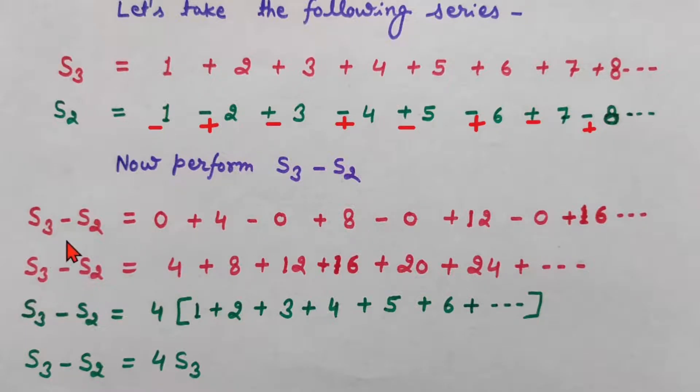So I can write this S3 minus S2 as 4, 8, 12, 16, 20, 24. Simply multiples of 4 here up to infinity. So S3 minus S2 is actually we can take out 4. We can take 4 common. So it will be 1 plus 2 plus 3 plus 4 up to infinity.